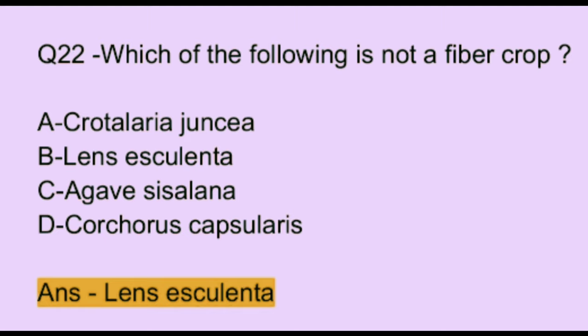Question number 22. Which of the following is not a fiber crop? Option A: Crotalaria juncea. Option B: Lens esculenta. Option C: Agave sisalana. Option D: Corchorus capsularis. The correct answer is option B, which is Lens esculenta.